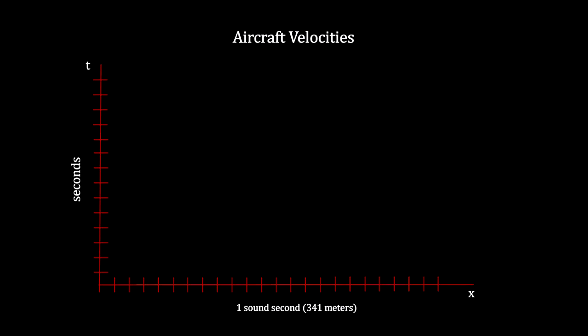To graph the speeds these cars and aircraft have achieved, we'll need to adjust the units on the X-axis again. This time, we'll make each interval on the X-axis equal to the distance sound travels in air in one second. That's 341 meters. The line at 45 degrees that divides the area in half is the line that represents the speed of sound in air.